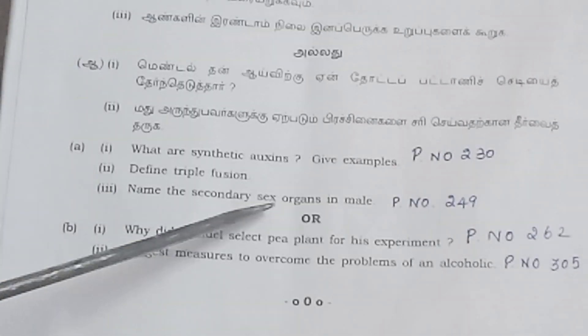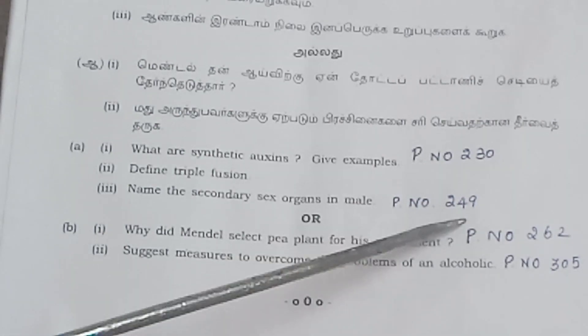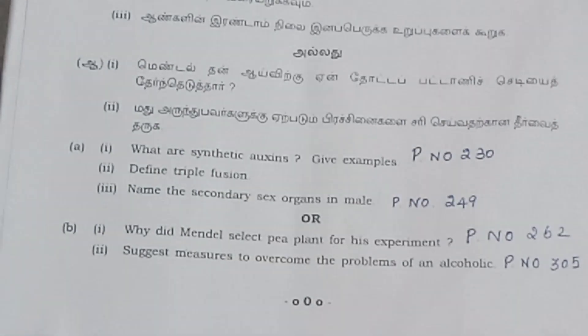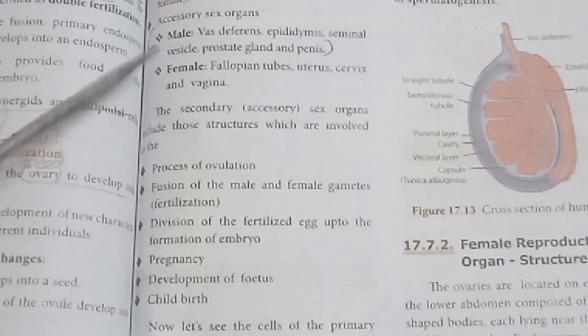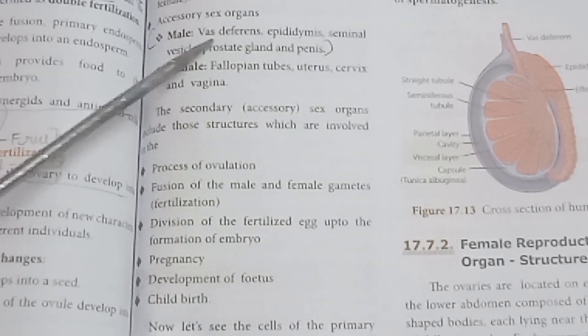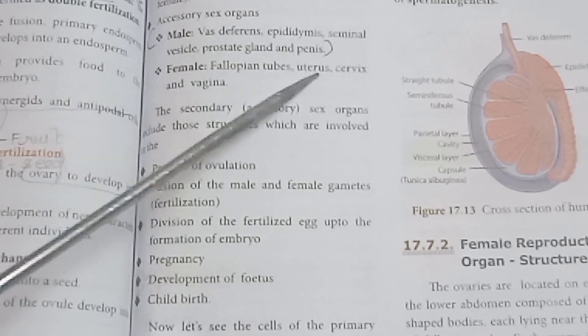Question 35 part 2: Name the secondary sex organs in males. Refer to page number 249. Male secondary sex organs include the vas deferens (ductus deferens) and penis.